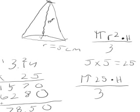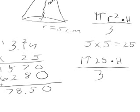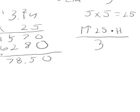Okay, so now we have that out of the way. Our new equation is 78.50 times our height, which is 15, as you can see from the cone. So now we have to do that.